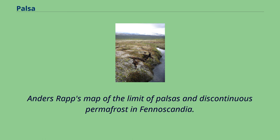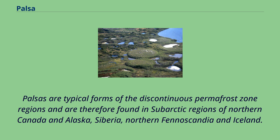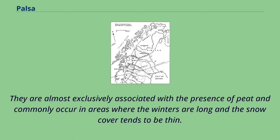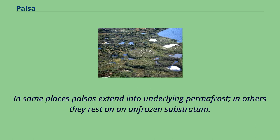Anders Rapp's map of the limit of palsas and discontinuous permafrost in Fennoscandia. Palsas are typical forms of the discontinuous permafrost zone and are therefore found in subarctic regions of northern Canada and Alaska, Siberia, northern Fennoscandia, and Iceland. They are almost exclusively associated with the presence of peat and commonly occur in areas where the winters are long and the snow cover tends to be thin. In some places palsas extend into underlying permafrost; in others they rest on an unfrozen substratum.